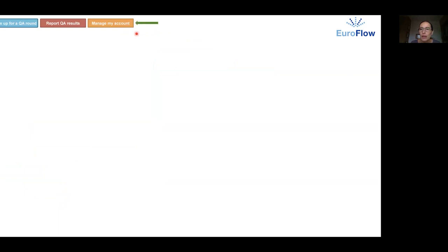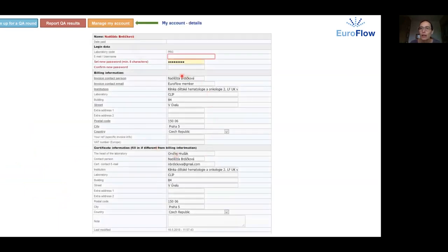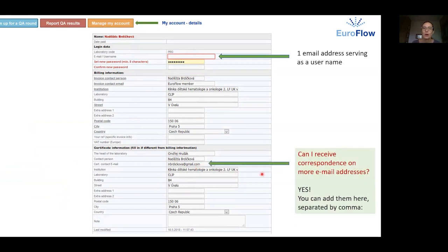When you go to manage my account link, you will get to the same form that you have filled during your first registration. You can change any details here. If you want to get the correspondence on more email addresses, you can add them here in the certificate contact email field separated by comma. If you want us to quote your purchase order number on the invoice, you can fill it here in your reference field.